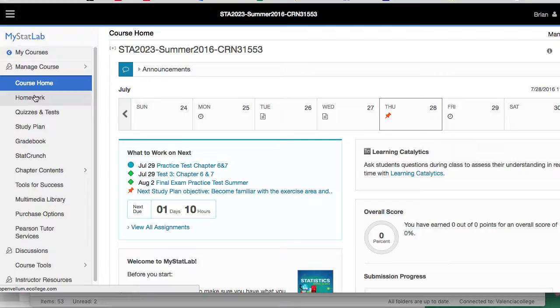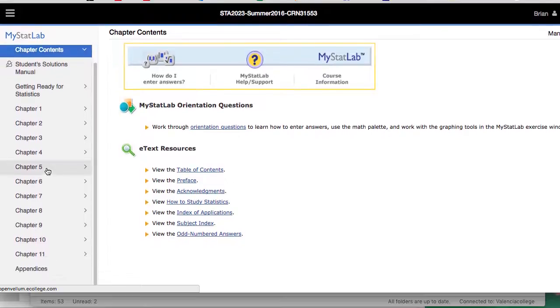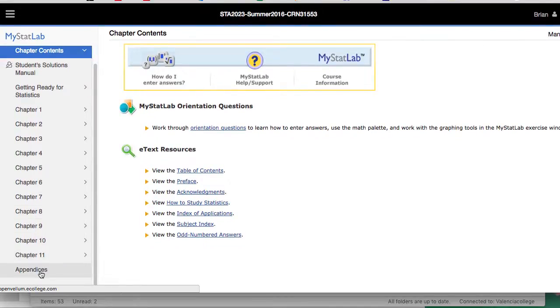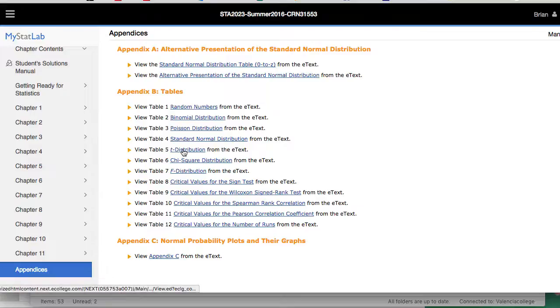There are most of the problems we can use the table in the back of the book. So I just want to point out to you that if we go to chapter contents in MyStatLab, and then we go to appendices, we can pull up table 5, and that's the t-distribution table.